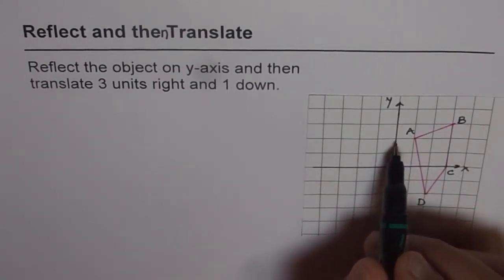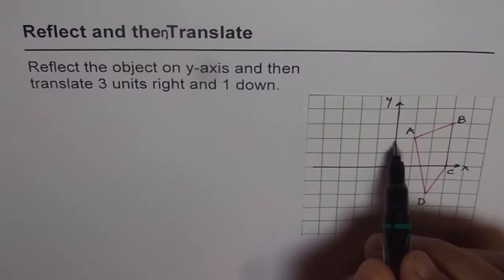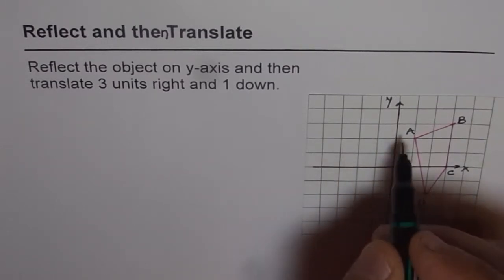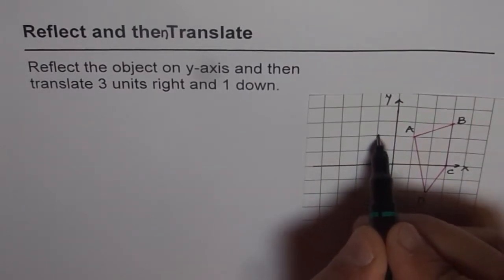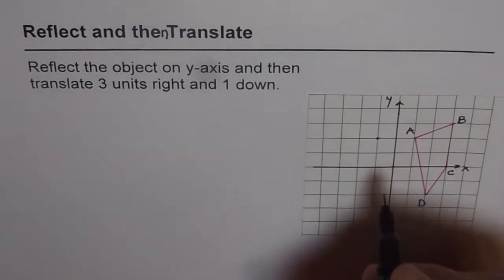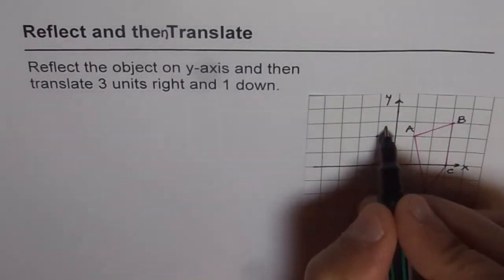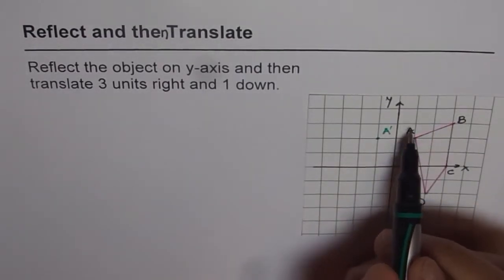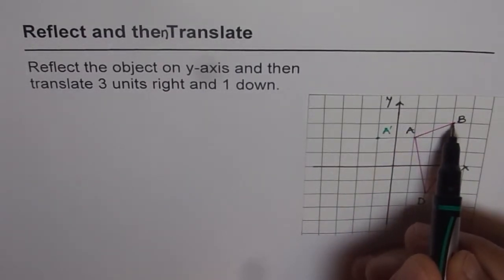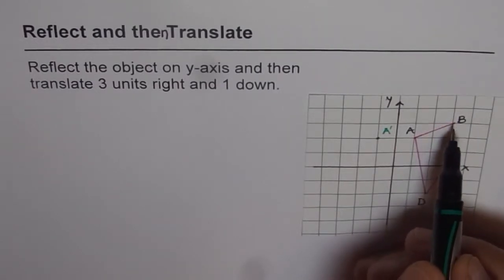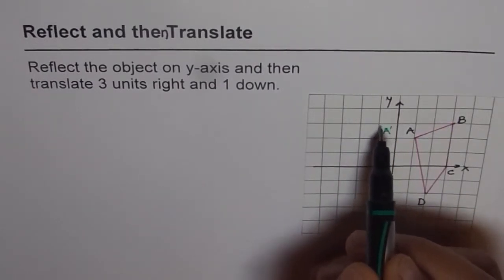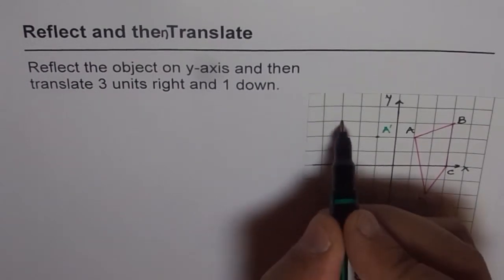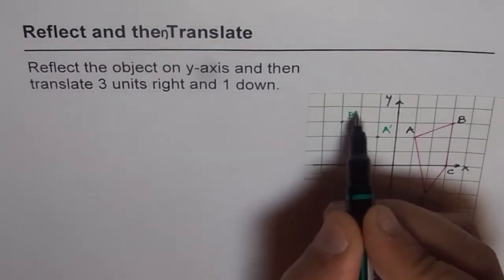So A is one unit to the right, it will be one unit to the left. So the A point will be reflected and will be seen here. We will call this point as A dash. Similarly, point B is three units right. So for the same height, we will put it three units left, and mark this point as B dash.